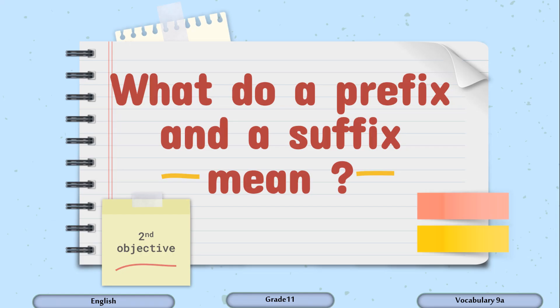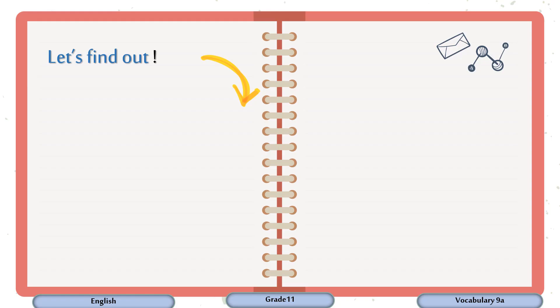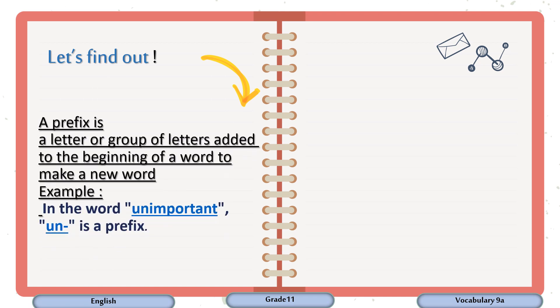Now let's move on to the second objective. What do a prefix and a suffix mean? Let's find out. So a prefix is a letter or group of letters added to the beginning of a word to make a new word. Example, in the word unimportant, the un is a prefix.